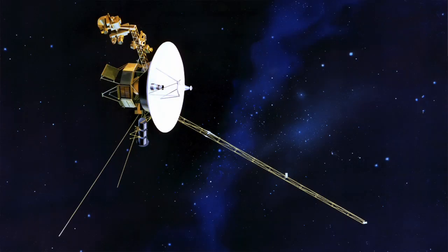The fastest human craft ever built are the two Voyager space probes. Relative to Earth, they are now moving at 17,000 meters per second. 17 kilometers per second.